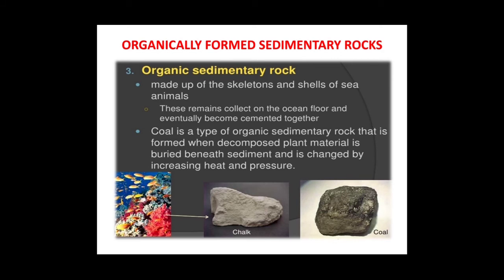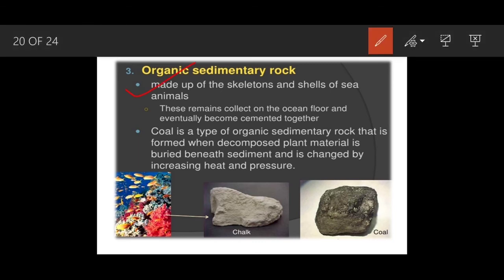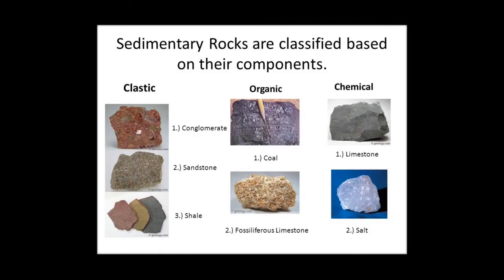Organically formed sedimentary rocks involve living beings. They are made up of skeletons and shells of sea animals, whose dead remains collect on the ocean floor and eventually become cemented together. Coal is an example — it is formed when decomposed plant material is buried beneath sediment and changed by increased heat and pressure, becoming a fossil fuel.